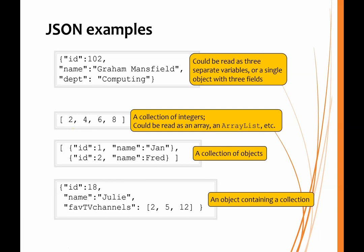You'll see that we are able to interpret these strings in several ways, which can be useful. It might be, for example, that one program outputs an array and another program reads it as an array list, because that's more convenient for that reading program. This shows the flexibility of JSON.